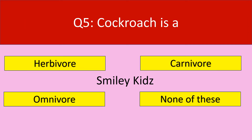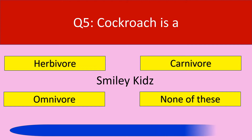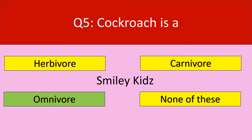Question number 5. Cockroach is a. Options are herbivore, carnivore, omnivore, none of these. Your time starts now. The correct answer is omnivore. Cockroach is an omnivore.